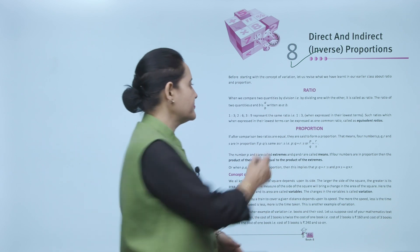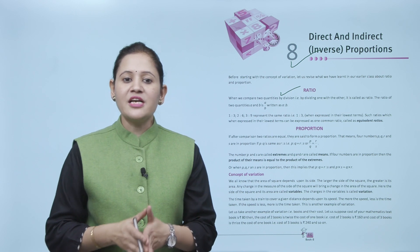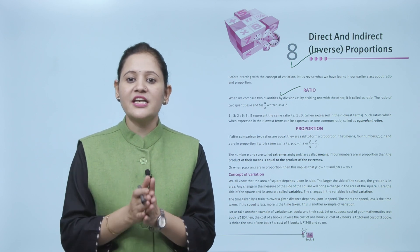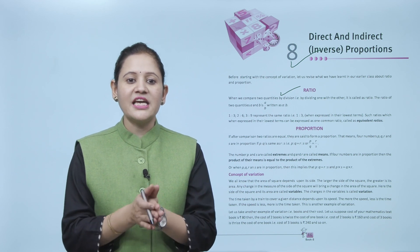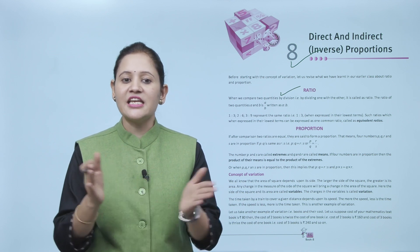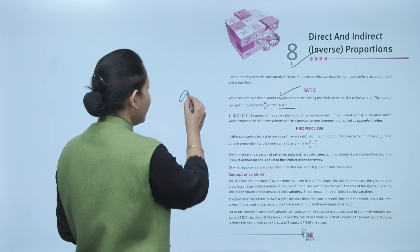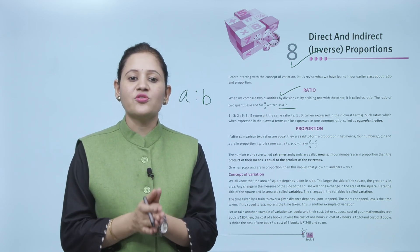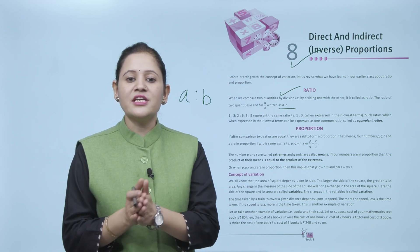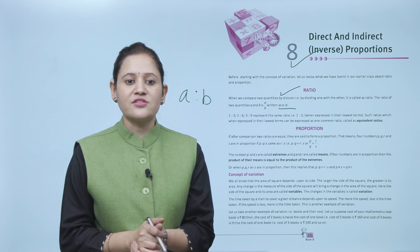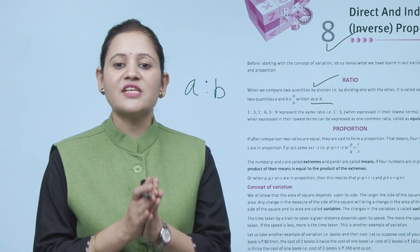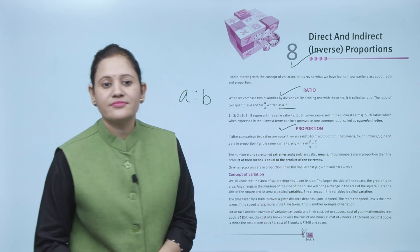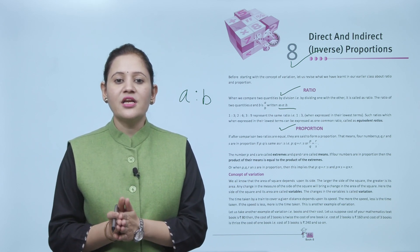First is ratio. When we compare two quantities by division — dividing one with the other — the ratio of two quantities a and b is a upon b, written as a ratio b. For example, 1:3, 2:6, and 3:9 represent the same ratio. When expressed in their lowest term, such ratios are called equivalent ratios.